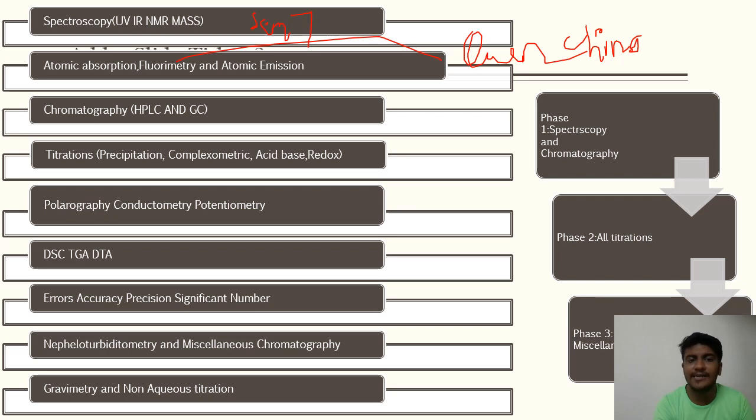Next up we have titrations. In titrations we have precipitation, complexometry, acid-base and redox, and also non-aqueous titration. But that we are going to discuss in a separate point. These are four basic titrations that you need to know, especially the indicators, the pH and the color change. Suppose phenolphthalein, it is acid-base indicator and in alkaline pH it is pink, like in around 8.3 to 11.